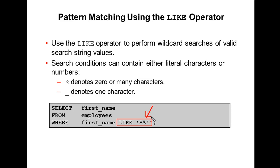In this statement, LIKE is the operator and percentage (%) denotes zero or many characters. For example, if last name is like 'SAM', it can return both records 'SAMS' and 'SAM'.